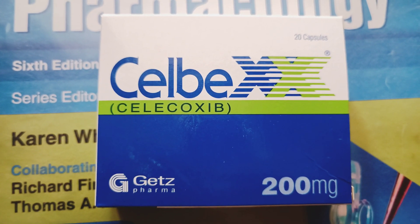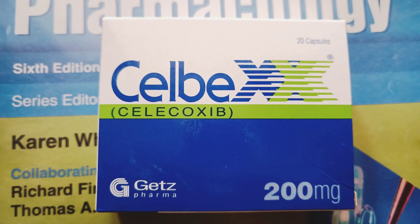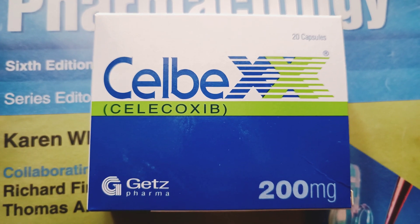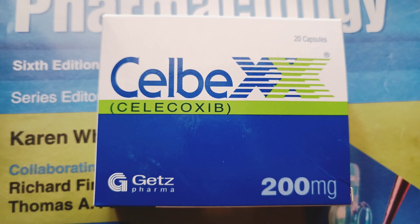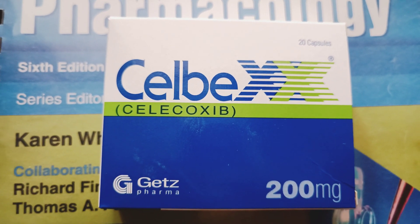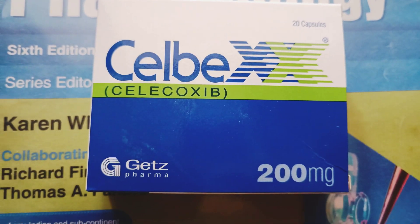Here is selective COX-2 inhibitor like celecoxib. It comes in capsule form like 200 mg capsule. The 200 mg is once daily and 100 will be twice daily.